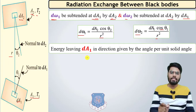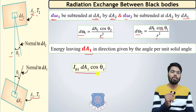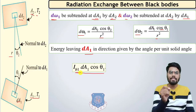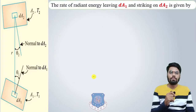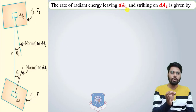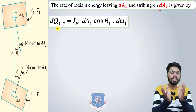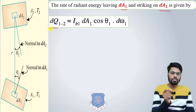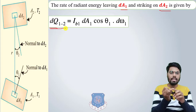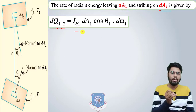Now let's discuss the energy leaving dA1 in the direction given by angle θ1 per unit solid angle. This can be written as ib1·dA1·cosθ1, where ib1 is the black body intensity of surface 1 and cosθ1 accounts for the direction. The rate of radiant energy leaving dA1 and striking dA2 is denoted dQ1→2, because the areas considered are differential areas dA1 and dA2, not the whole areas A1 and A2.